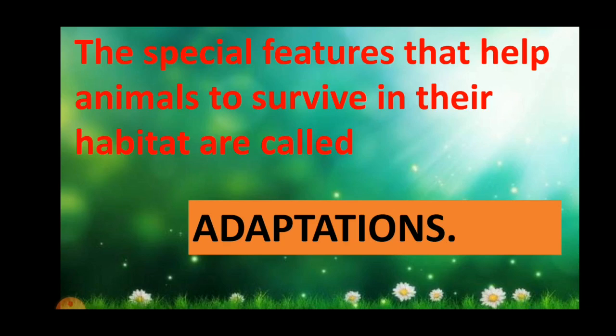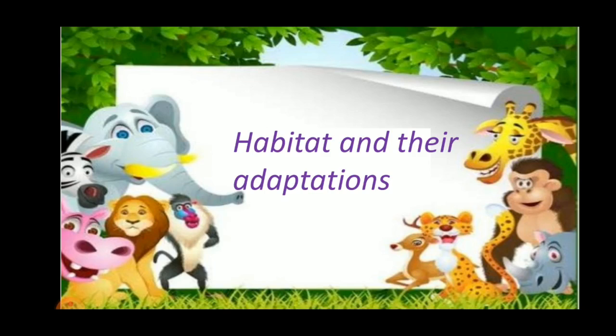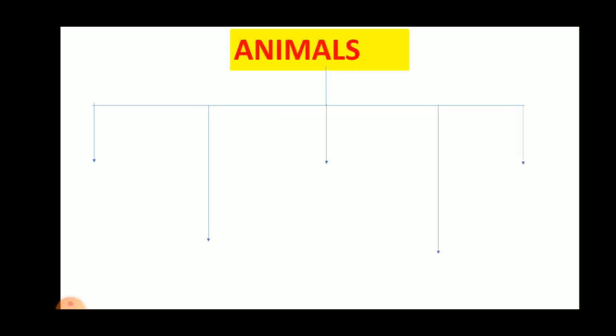Now let us learn about the natural habitat of animals and their adaptation. Animals can be placed in 5 major groups depending on their habitat.